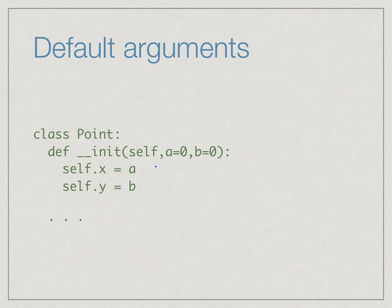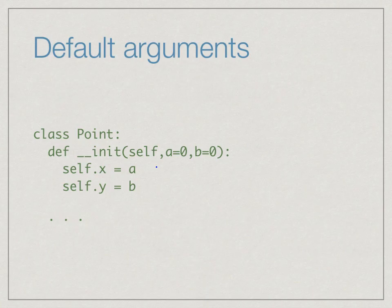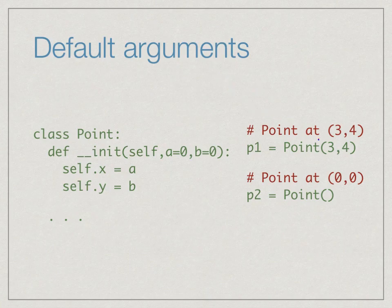In Python functions we can provide default arguments to make some arguments optional. For instance, if we don't specify the x and y coordinates of a point, by default the point will be created at the origin — we use a equals zero and b equals zero as default arguments. If the user provides values like Point(3, 4) the point is placed there; if no arguments are passed like p2 equals Point(), a point at the origin is created.